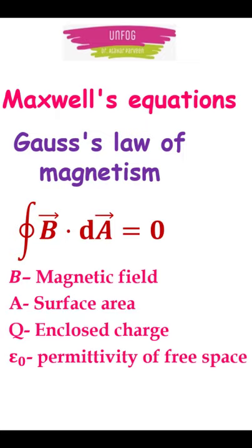Second law is Gauss's law of magnetism, which says that the magnetic field is a closed field, so its closed integral in a given area is zero.